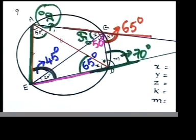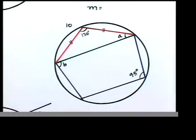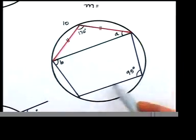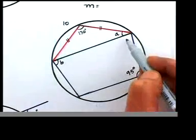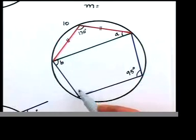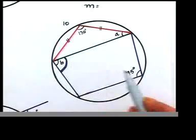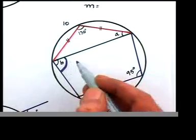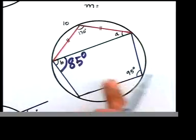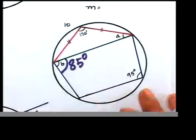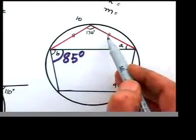Question 10 — let's go a bit slow. This question seems very easy. There's a cyclic quadrilateral on the screen. We don't need to find all angles — just a and b. For b: opposite angles of a cyclic quadrilateral add up to 180°, so 95° + b = 180°, giving b = 85°.